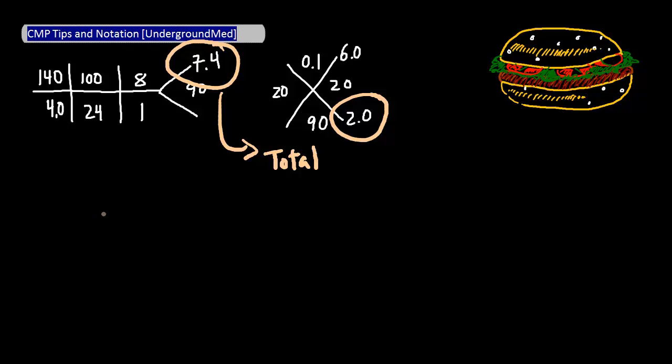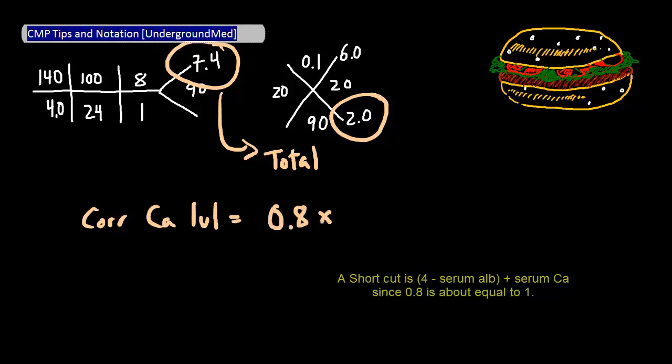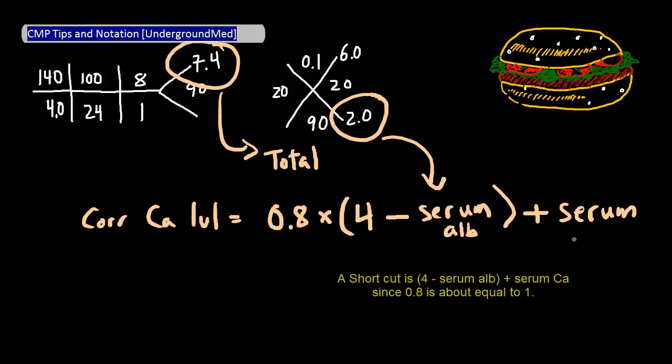To determine this, use the following equation to find your corrected calcium level. Remember, this is only for the setting of hypoalbuminemia. Your corrected calcium level is equal to 0.8 times 4, which is what you're assuming is the normal albumin level, minus your serum albumin, which is this guy, plus your serum calcium, which is this guy.